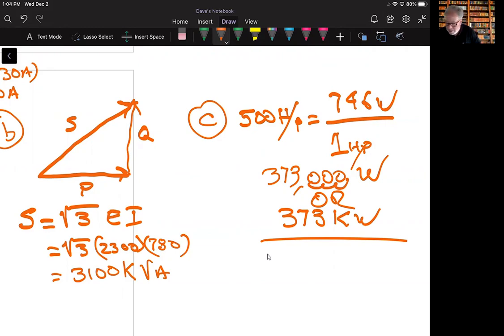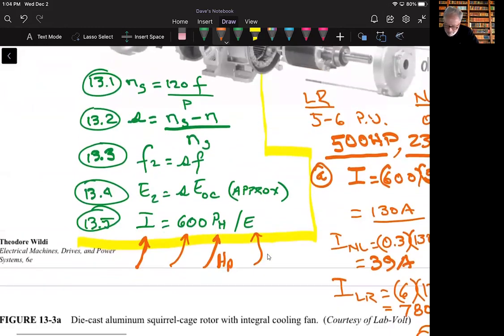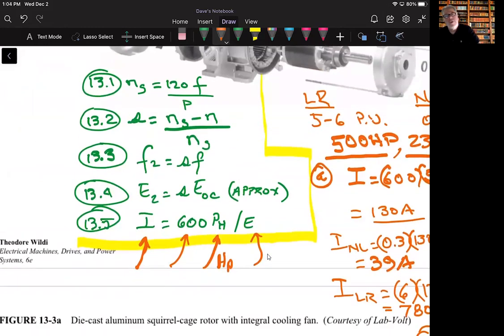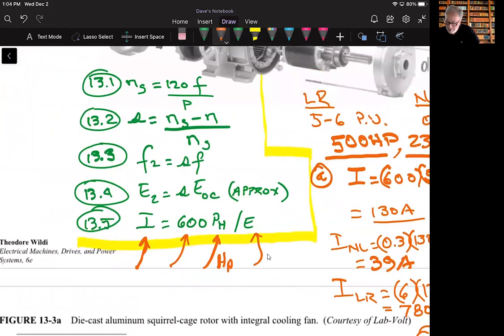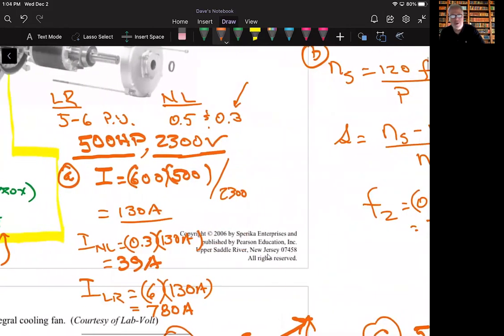So that's that problem. And again, once we use our equation 13.5 to get the full load current, then based on those characteristic curves, knowing that locked rotor is five to six times that amount, no load is 0.3 to 0.5, we can do these very accurate approximations of those other values.